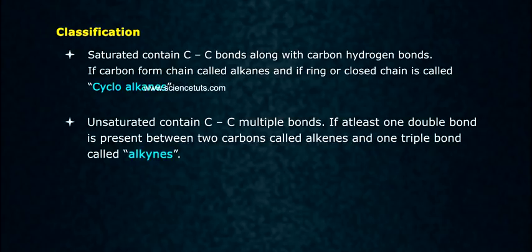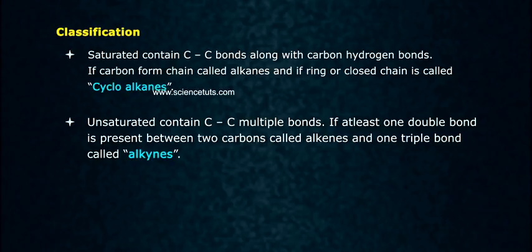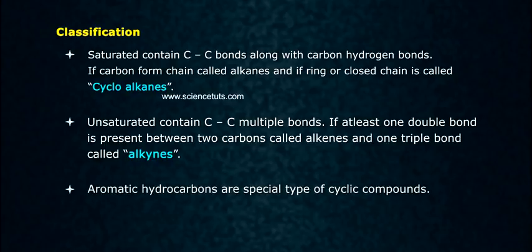Unsaturated hydrocarbons contain carbon-carbon multiple bonds. If at least one double bond is present between two carbons, they are called alkenes, and if there is one triple bond, they are called alkynes. Aromatic hydrocarbons are a special type of cyclic compounds.